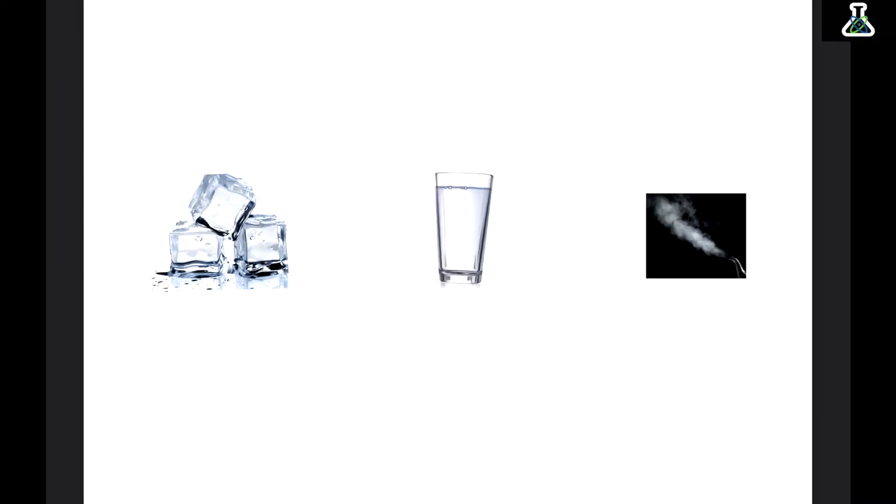So I said anything can be in any of these three states, depending on their temperature or pressure. And we have special names for when things go between states. If something moves from a solid to a liquid, we call that melting. And then if it goes from a liquid to a gas, it's called boiling. If we go from a gas back down to a liquid, it's called condensing. And then from a liquid to a solid, it's called freezing.